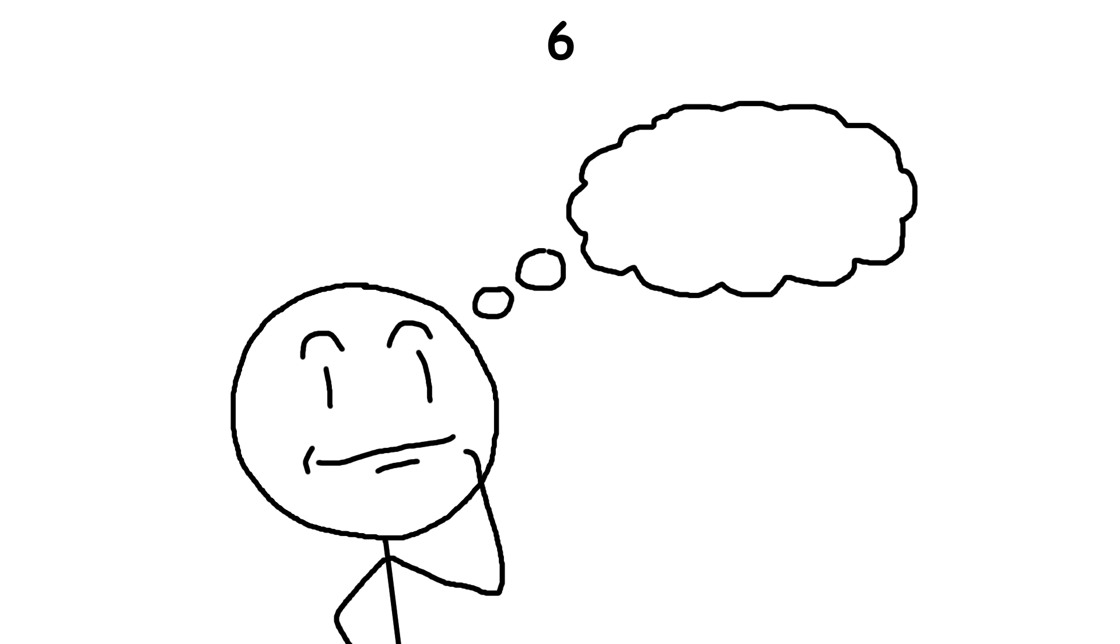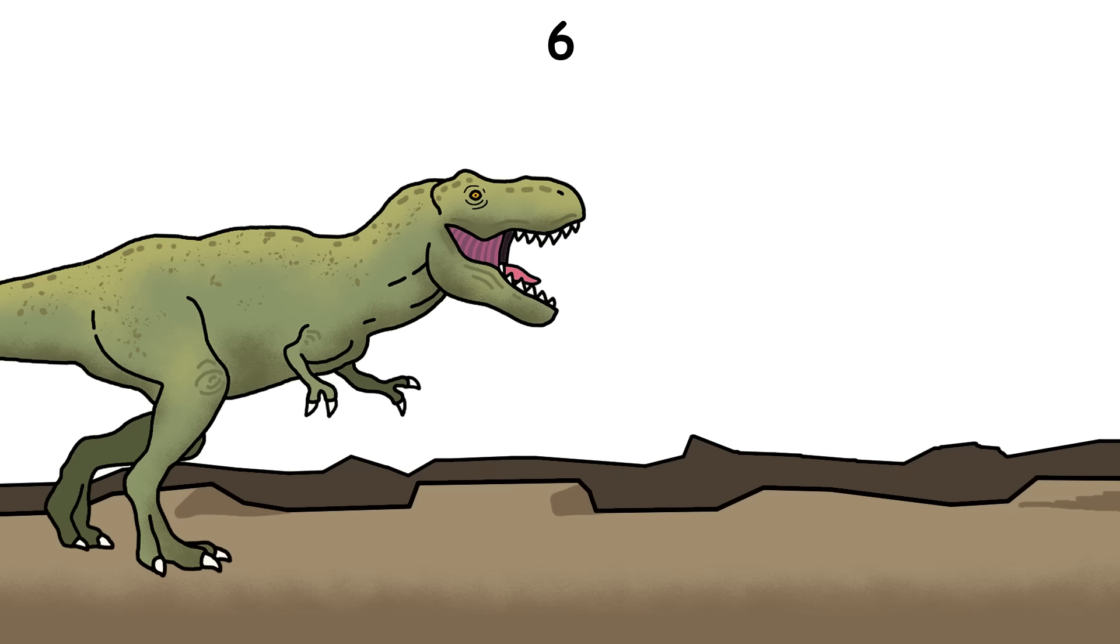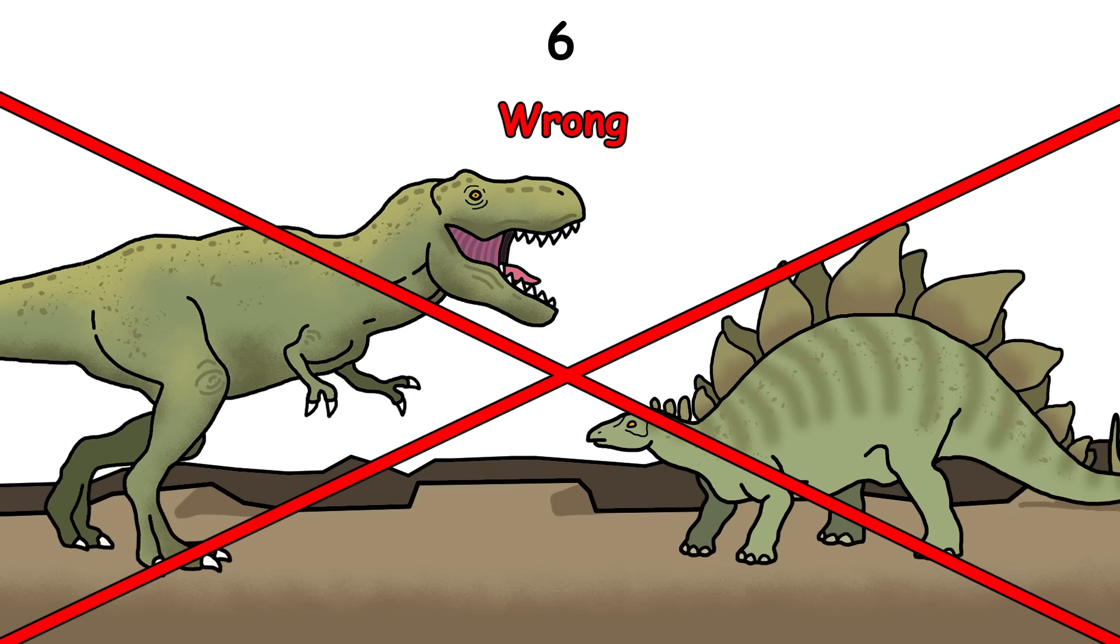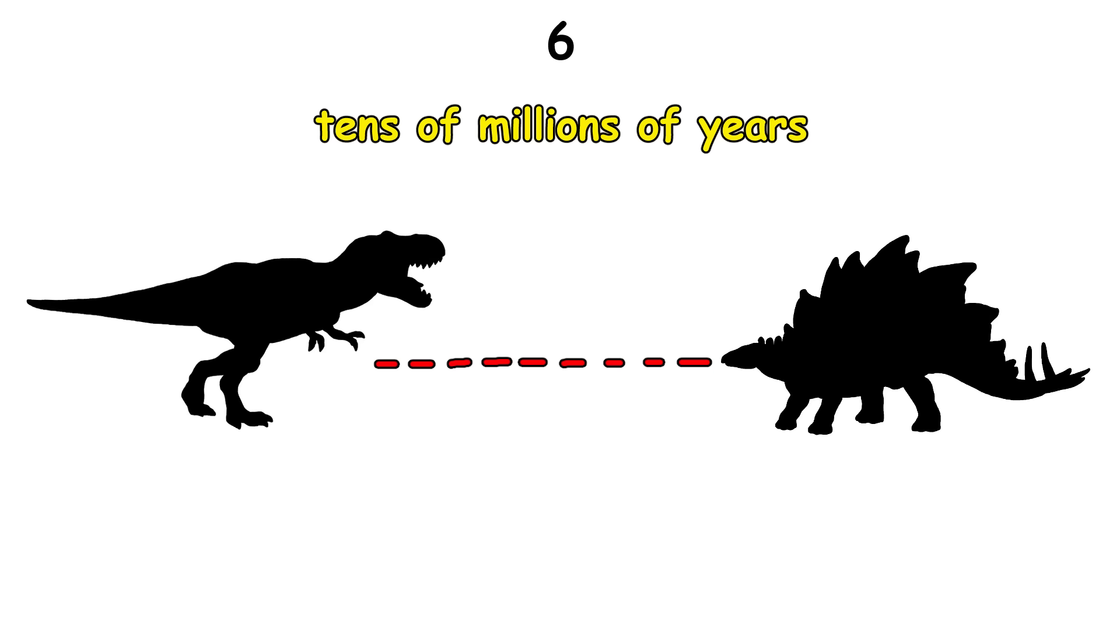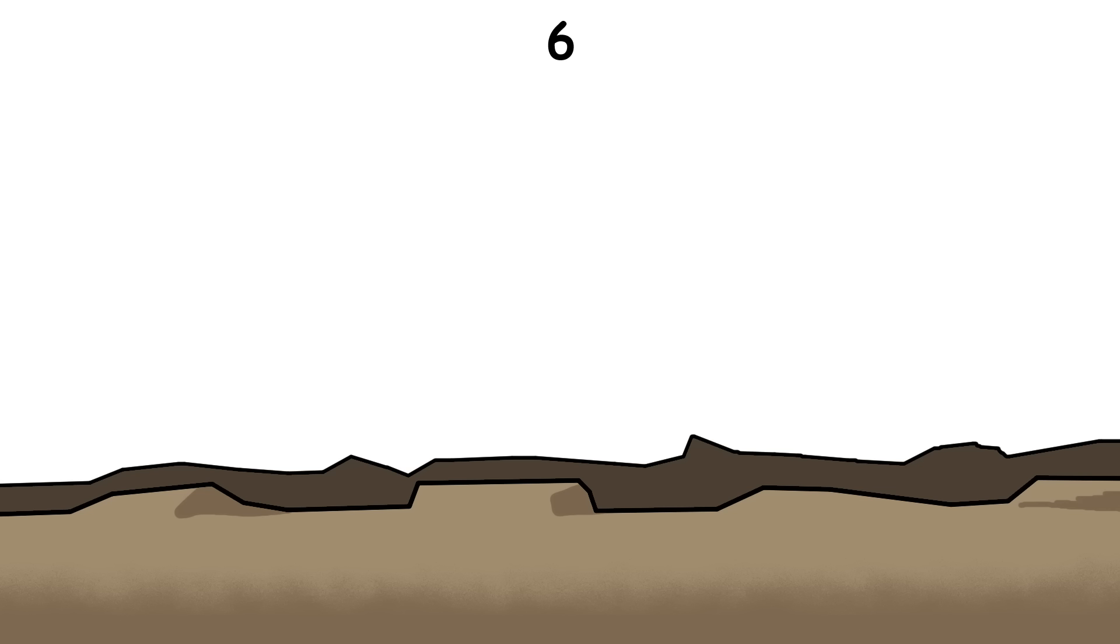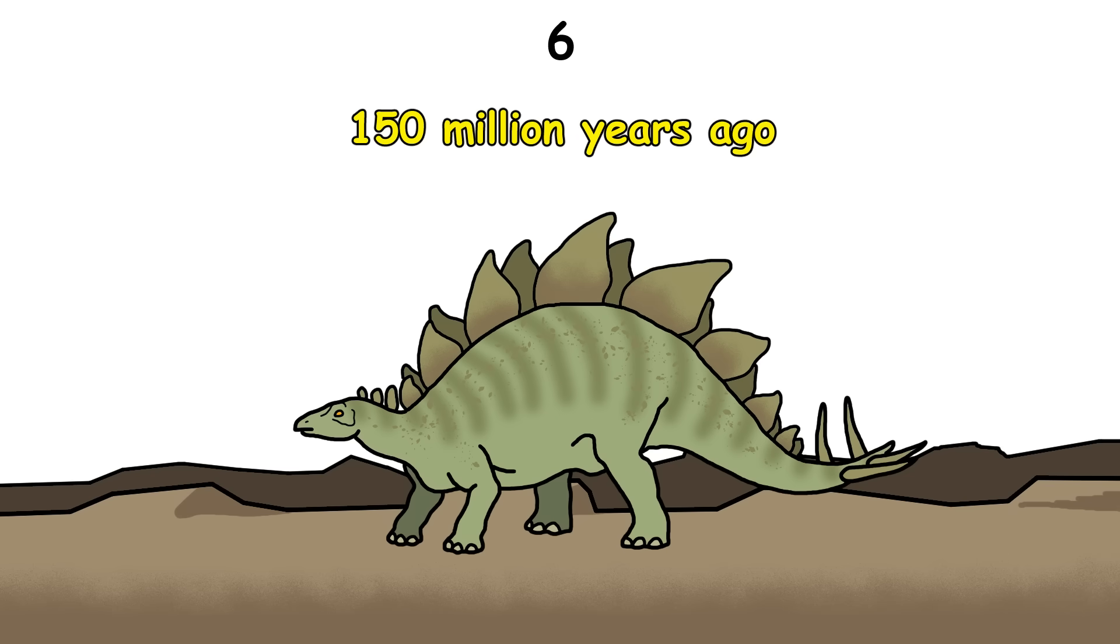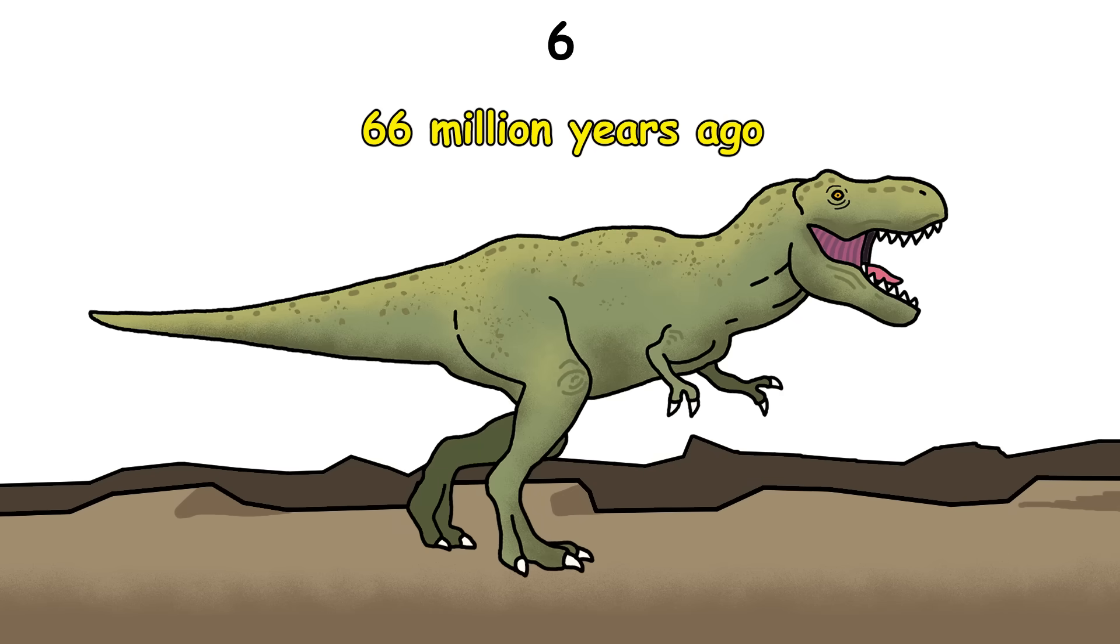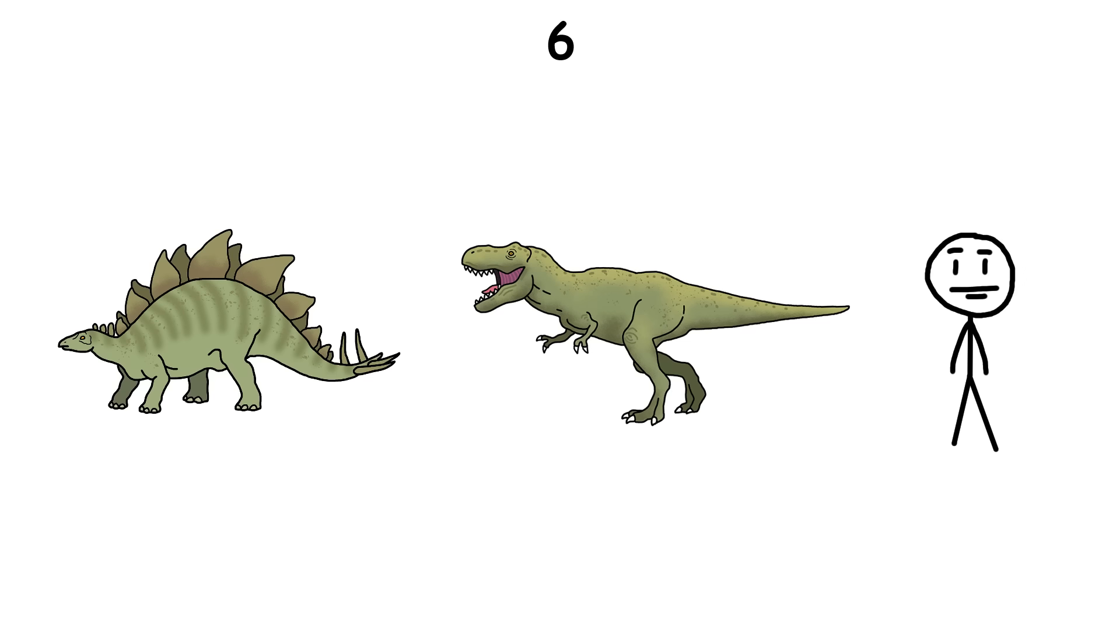Many people imagine all dinosaurs living at the same time, like T. rex and Stegosaurus, but that's completely wrong. Many species were separated by tens of millions of years. In fact, Stegosaurus lived around 150 million years ago, while T. rex lived about 66 million years ago, meaning more time passed between Stegosaurus and T. rex than between T. rex and us.